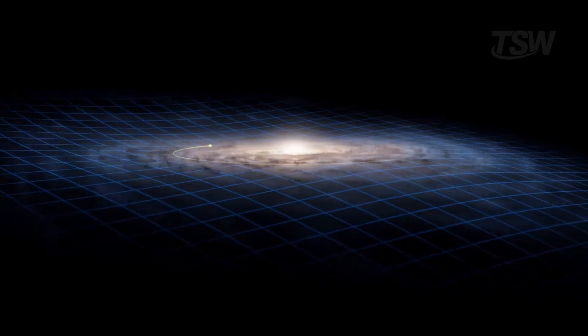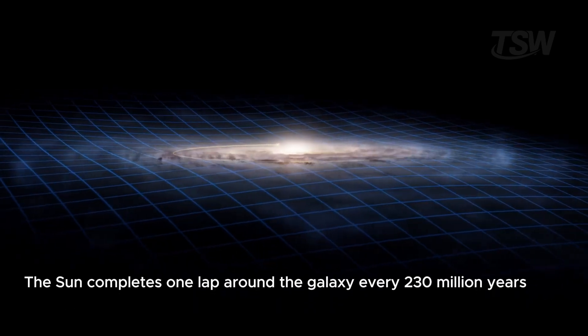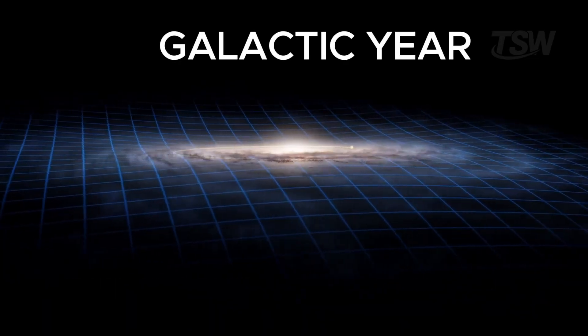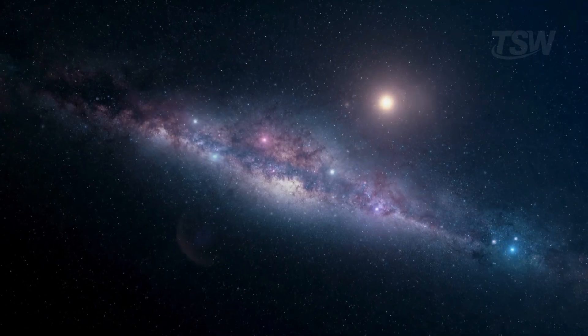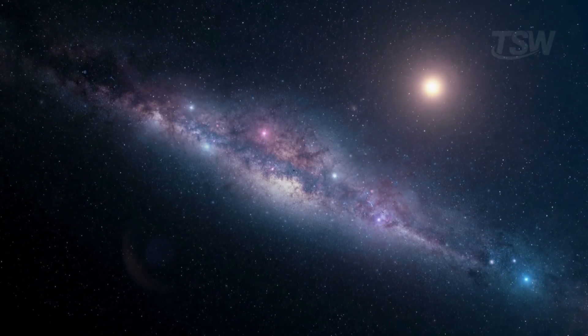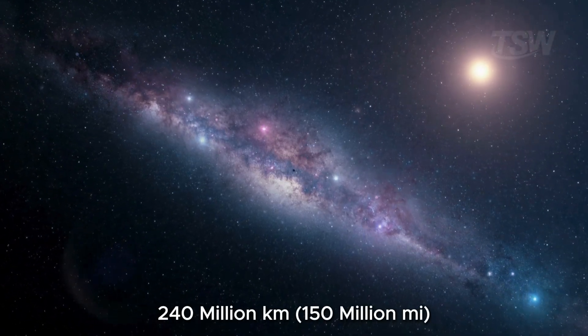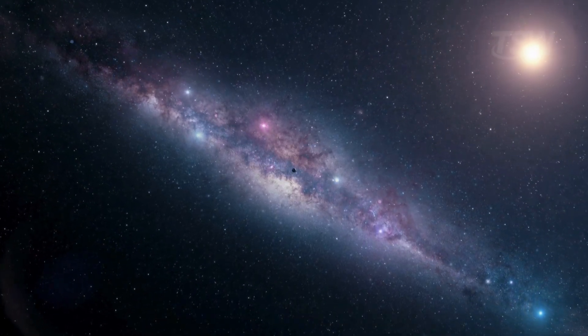The sun completes one lap around the galaxy every 230 million years. This period is called a galactic year. During that time, the solar system covers a gigantic distance, about 240 million kilometers, while orbiting the center of the Milky Way.